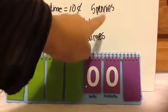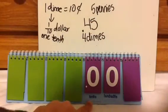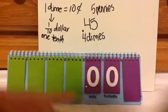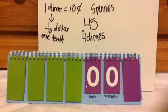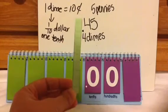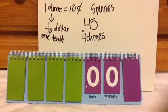We relate that tenth to the tenths place. When you have 45 cents, that's 4 dimes and 5 pennies, so you have 4 tenths of a dollar, or 40 cents in this place value. Because it's called tenths, we use the tens block to represent tenths.